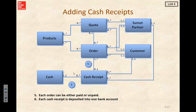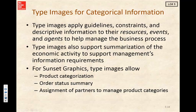Now's a good time to point out that we could also have what we call type images. Type images are just for categorical information. They apply guidelines, constraints, and descriptive information to any of our REA resources, events, or agents, and they just help with the process.